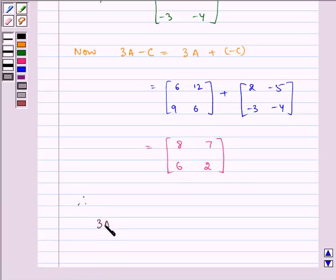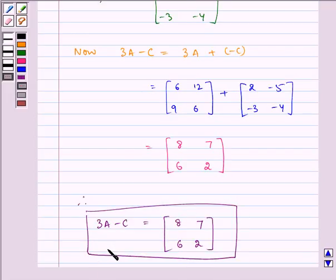Therefore, 3A minus C equals matrix 8, 7, 6, 2. I hope you understood the problem. Bye and have a nice day.